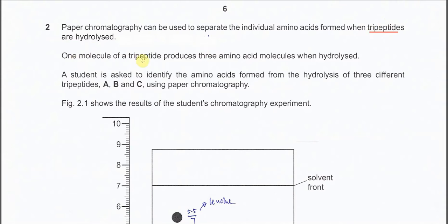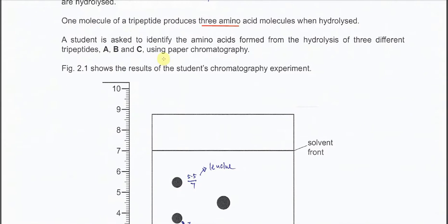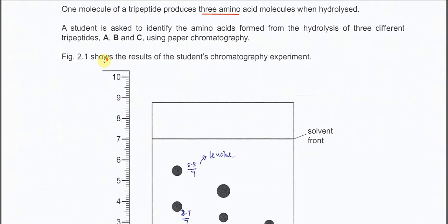One molecule of tripeptides produce three amino acids when it's hydrolyzed and a student is asked to identify the amino acids from the hydrolysis of three different tripeptides A, B, C using the paper chromatography.